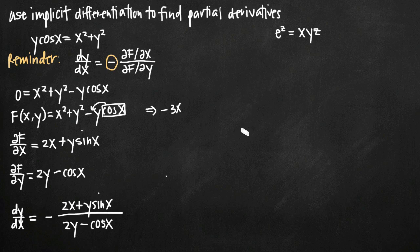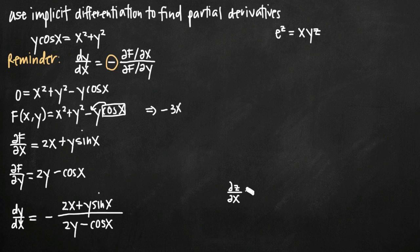Now for the three-variable function with x, y, and z, we're looking for the derivative of z with respect to both x and y. Because we have two variables in the denominator, we're going to need partial derivatives. Our final answer will actually be two separate equations: the partial derivative of z with respect to x, and the partial derivative of z with respect to y.